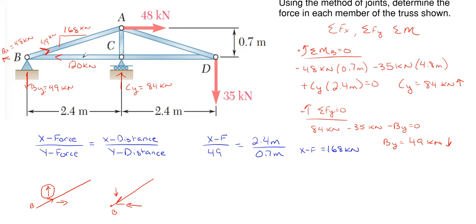Before moving on to another joint, we complete the members by adding the arrow direction at the other end. For member AB at joint A, the arrow is pulling away from B, which signifies tension. So it has to be pulling on joint A as well — the arrow at the opposite end goes in the opposite direction: down and to the left at B means up and to the right at A, pulling, tension. For member BC, we're pushing on joint B so we have to be pushing on joint C. Direction is to the left at B, so opposite end direction is to the right at C. Pushing on a joint signifies compression. So AB is tension and BC is compression.